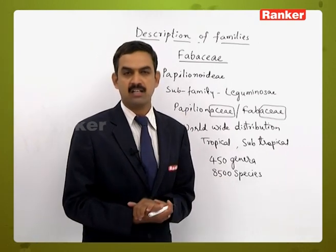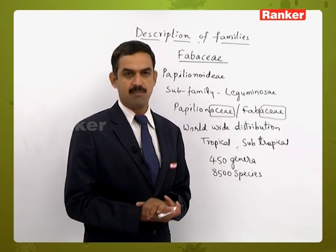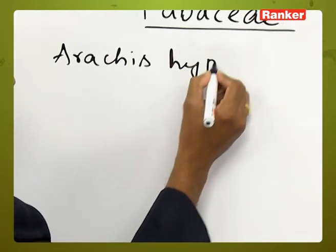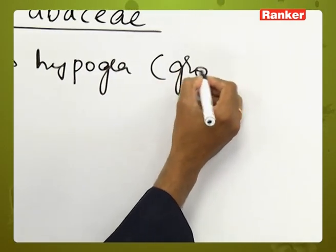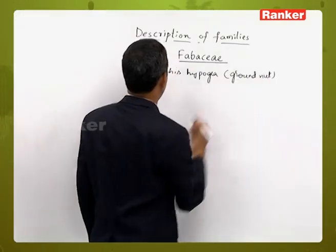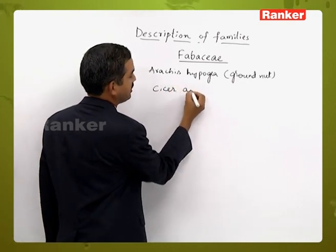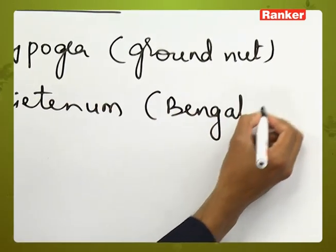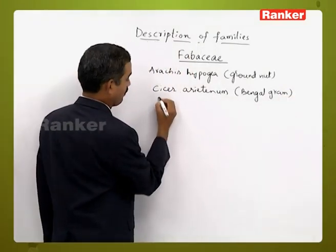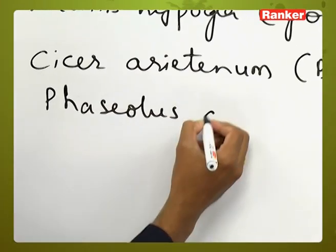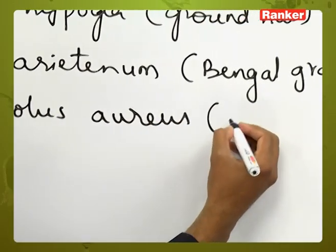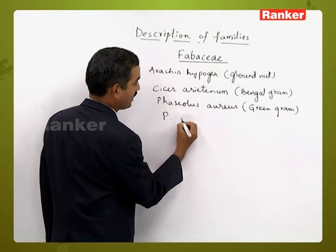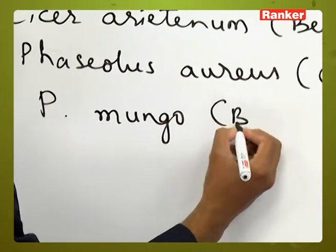Let us see some of the important family members of the Fabaceae family. Arachis hypogaea, commonly called as groundnut. Cicer arietinum, commonly called as Bengal gram. Phaseolus aureus, common name is green gram. Phaseolus mungo, common name is black gram.